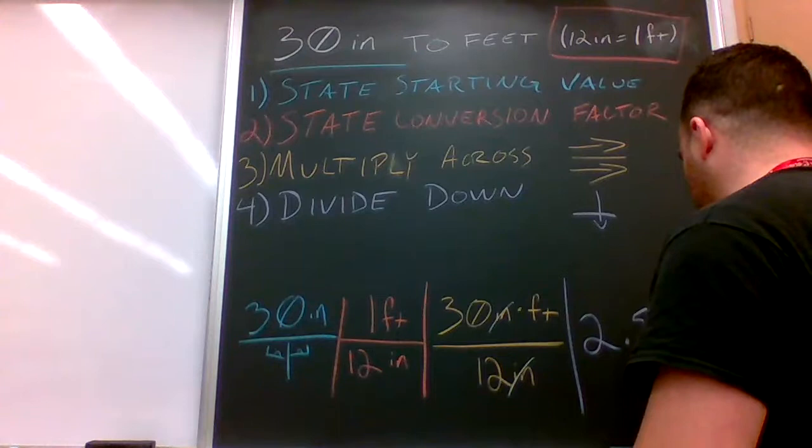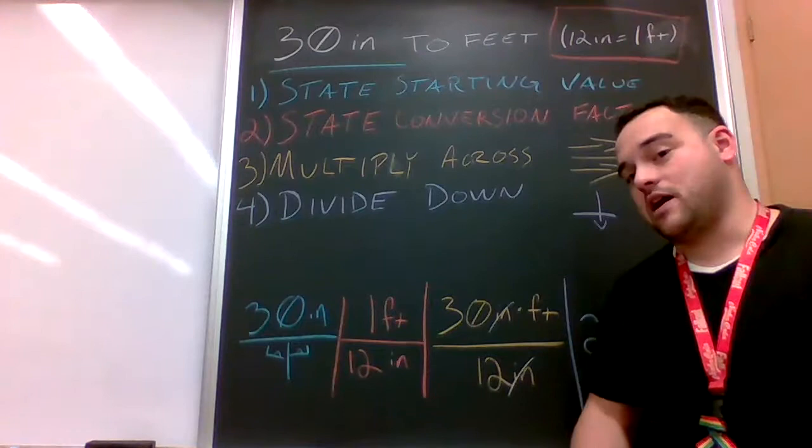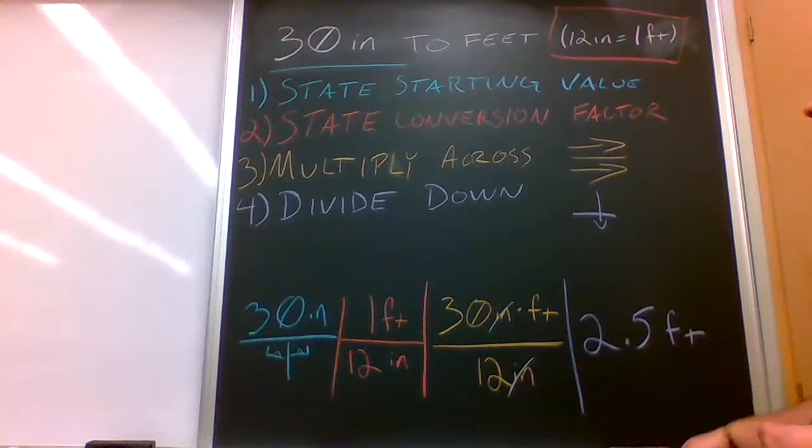So 30 divided by 12 is 2.5 feet. And you guys can check my math. I think that's right off the top of my head. 30, 12, 24, 6 more, 2.5, yep that works.